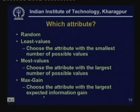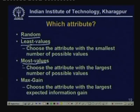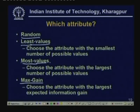Several strategies exist for selecting the best attribute: choosing randomly, choosing the attribute with the smallest number of values (min values), choosing the attribute with the largest number of values (max values), or choosing the attribute with the maximum expected information gain. The max gain heuristic is what we will study, as it has been found to be a very effective heuristic for learning decision trees.